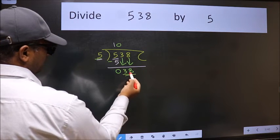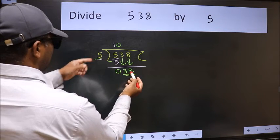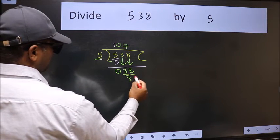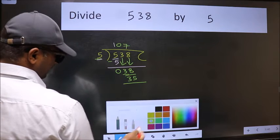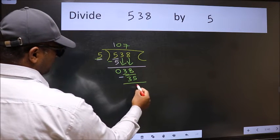Now 38. A number close to 38 in the 5 table is 5 times 7, which is 35. Now we should subtract. We get 3.